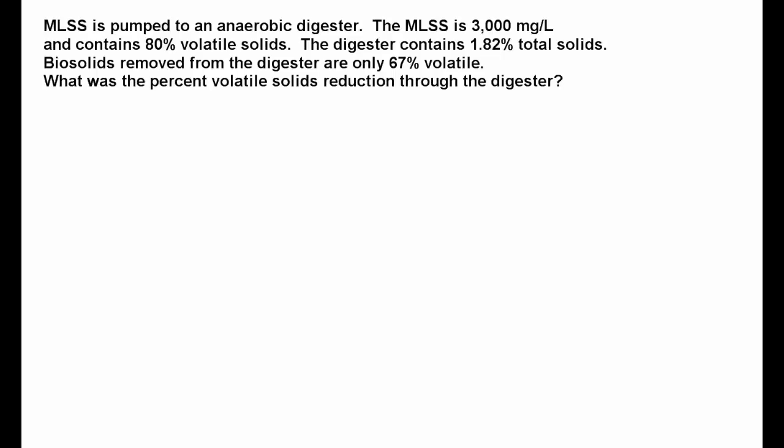Mixed liquor gets pumped to the anaerobic digester. The mixed liquor is 3,000 milligrams per liter, contains 80% volatile solids, and then they give you basically the same information from the digester. But when you're looking for percent volatile solids reduction, you really only need two numbers.